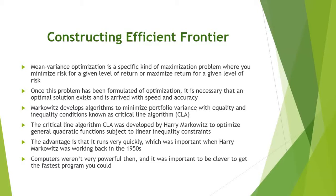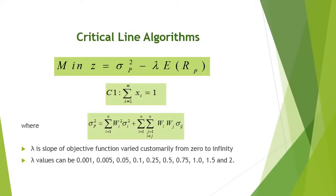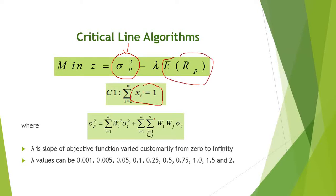The CLA is the algorithm where we optimize our risk with linear constraints. Previously when we were optimizing, we minimized the risk with two constraints: all weights should sum to one, and if short sales are not allowed, all weights should be greater than or equal to zero. If short sales are allowed, we do not need that second constraint.